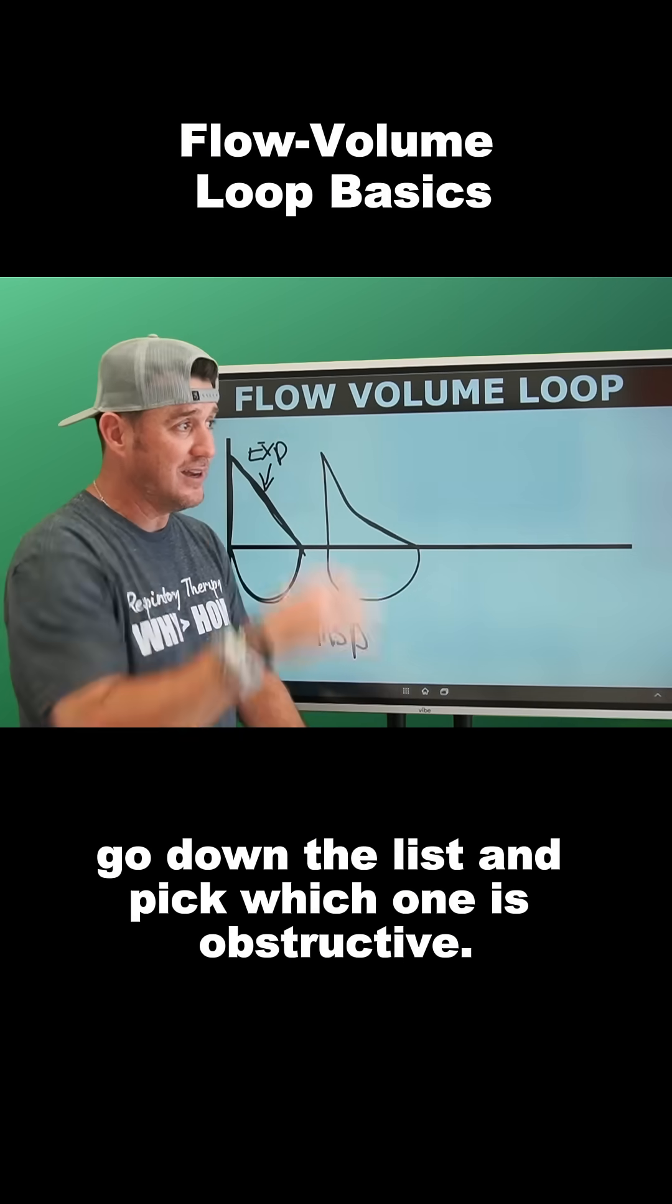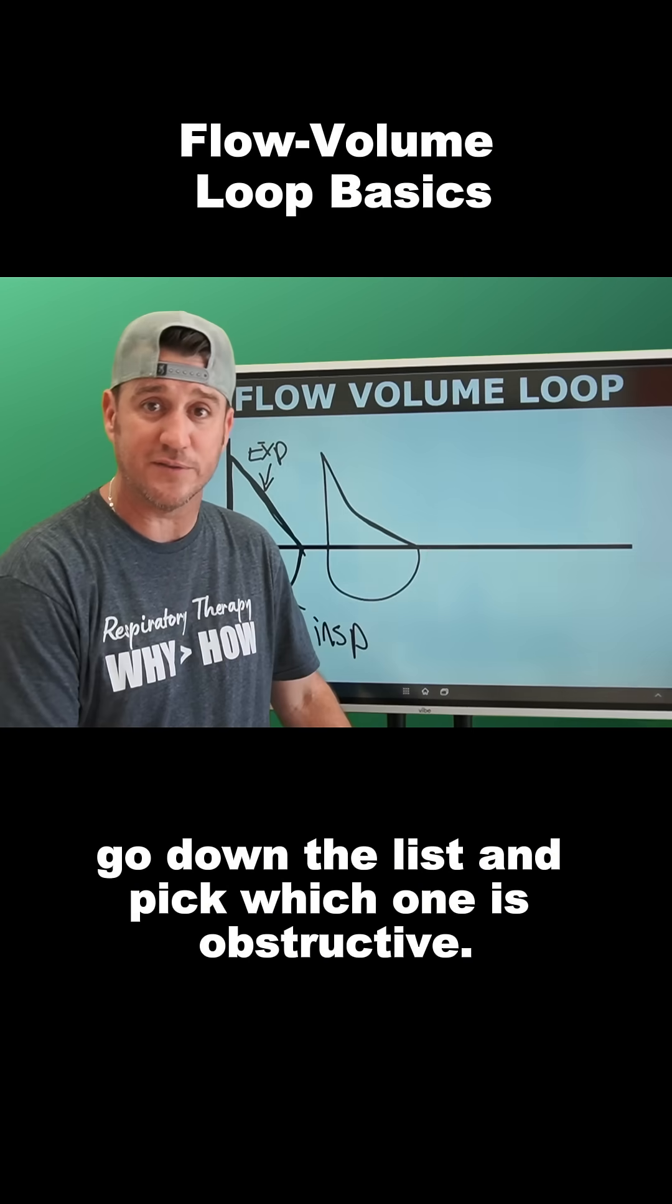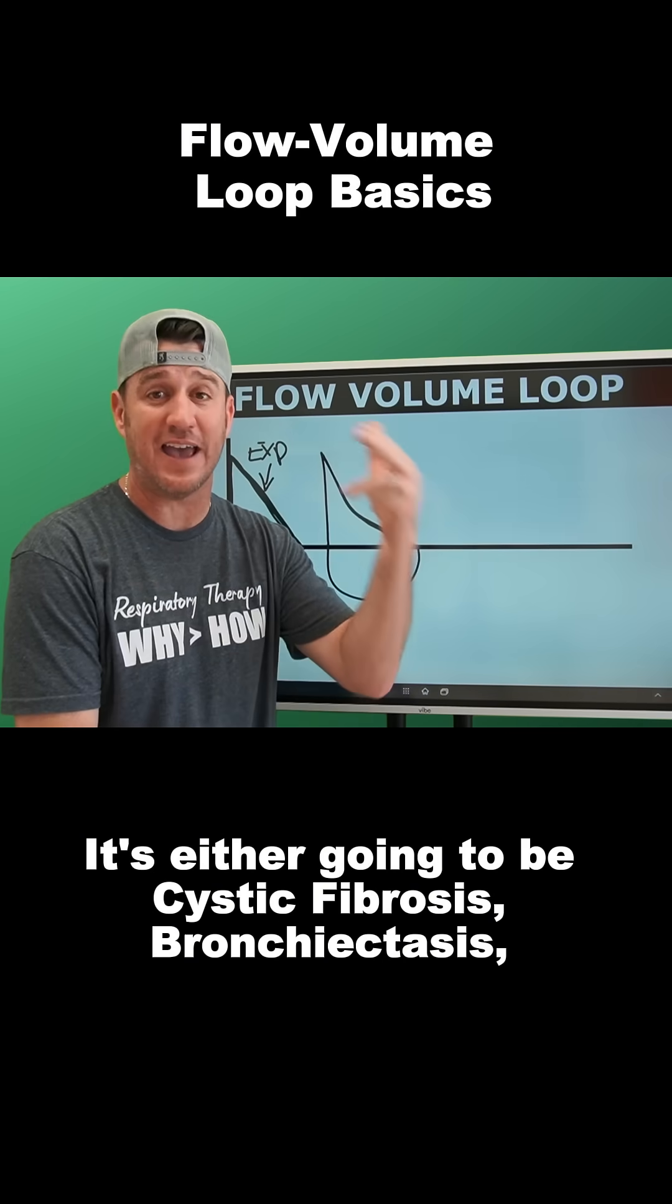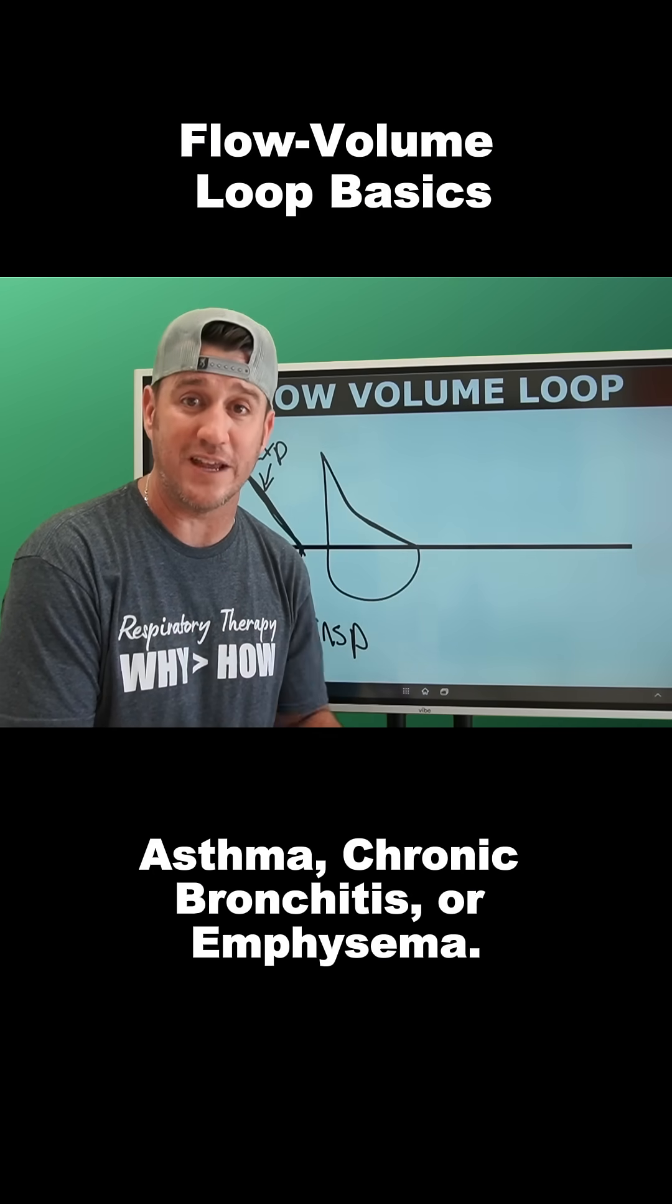Real simple, go down the list and pick which one is obstructive. It's either going to be Cystic Fibrosis, Bronchiectasis, Asthma, Chronic Bronchitis, or Emphysema.